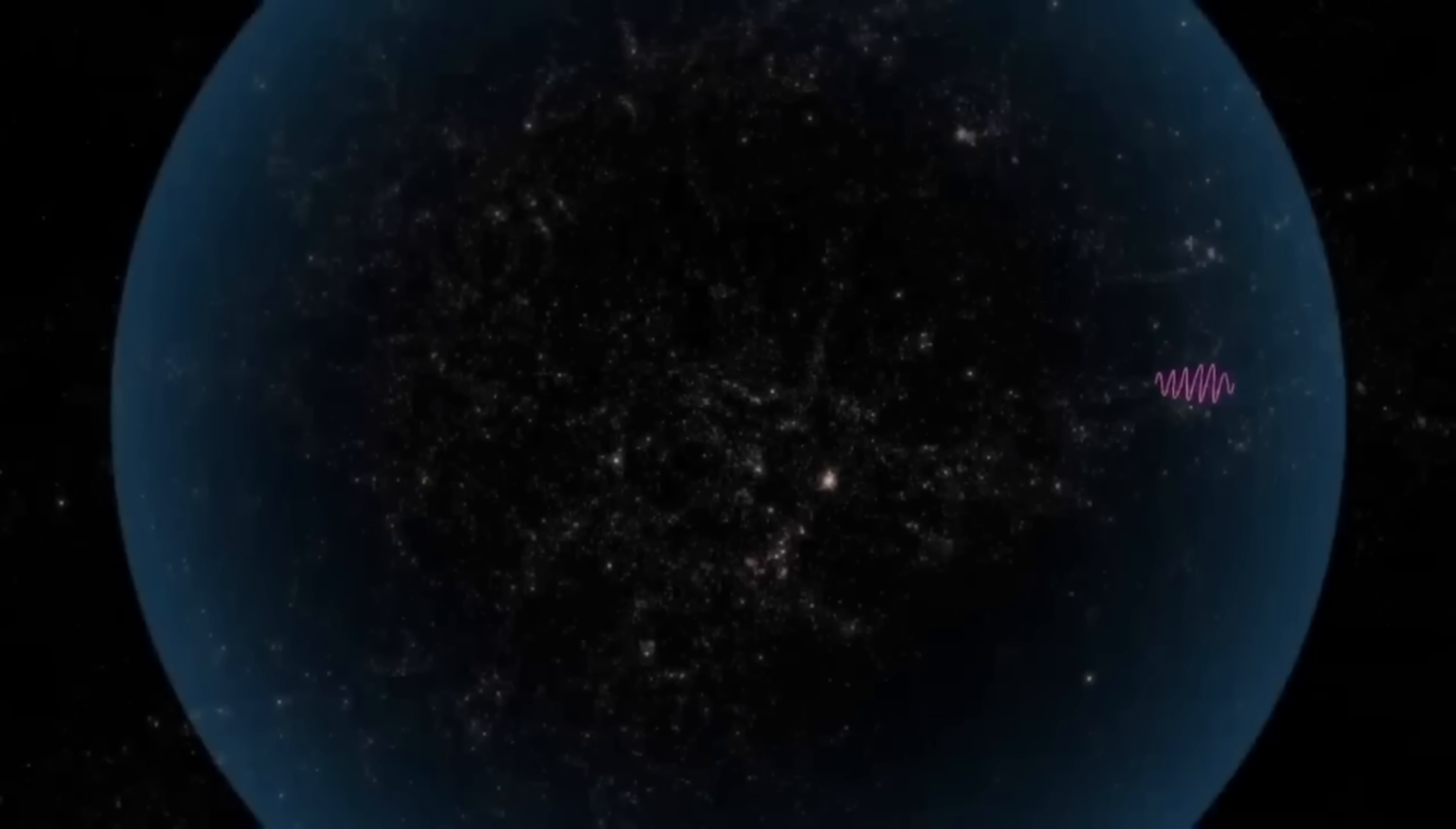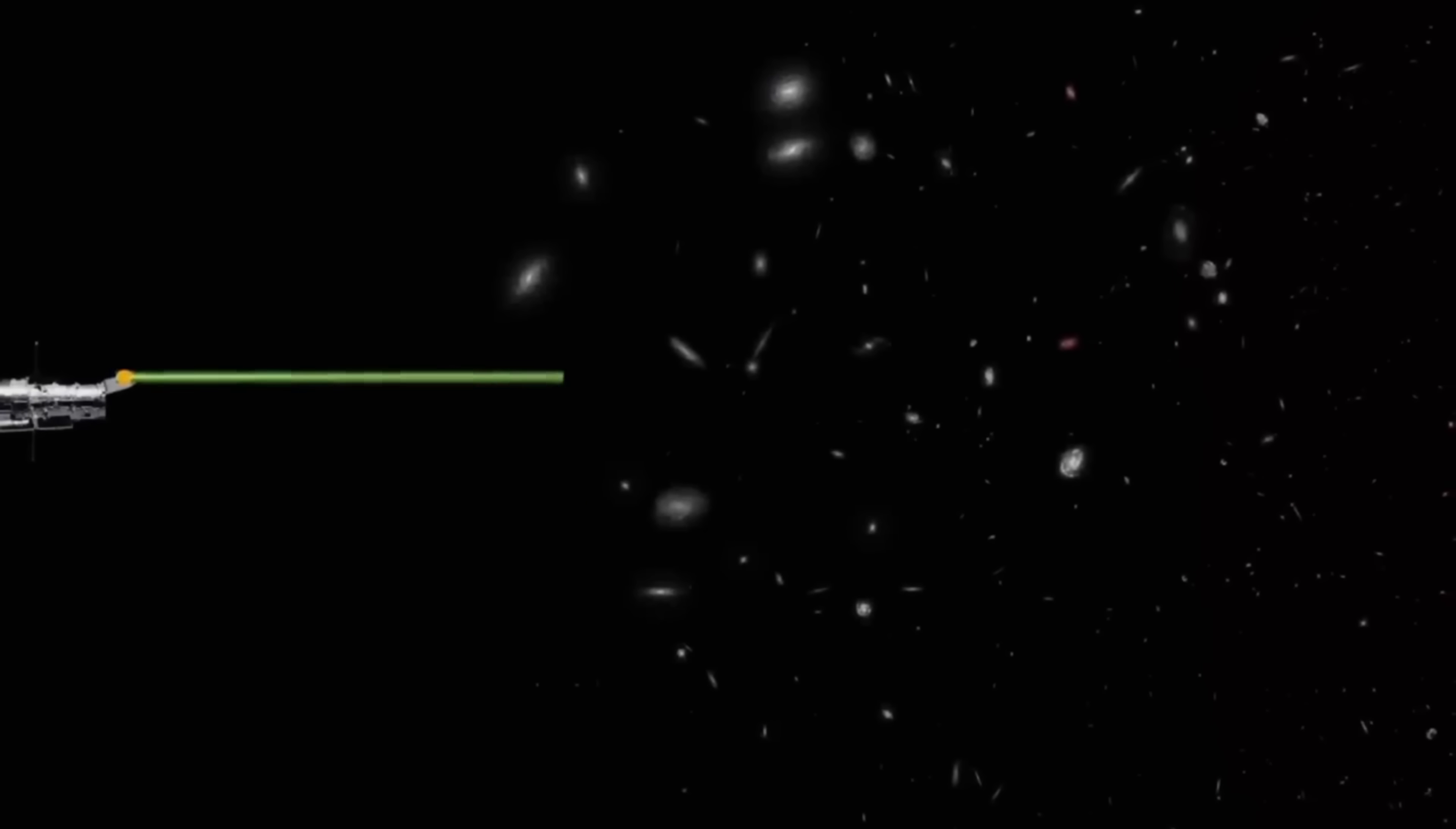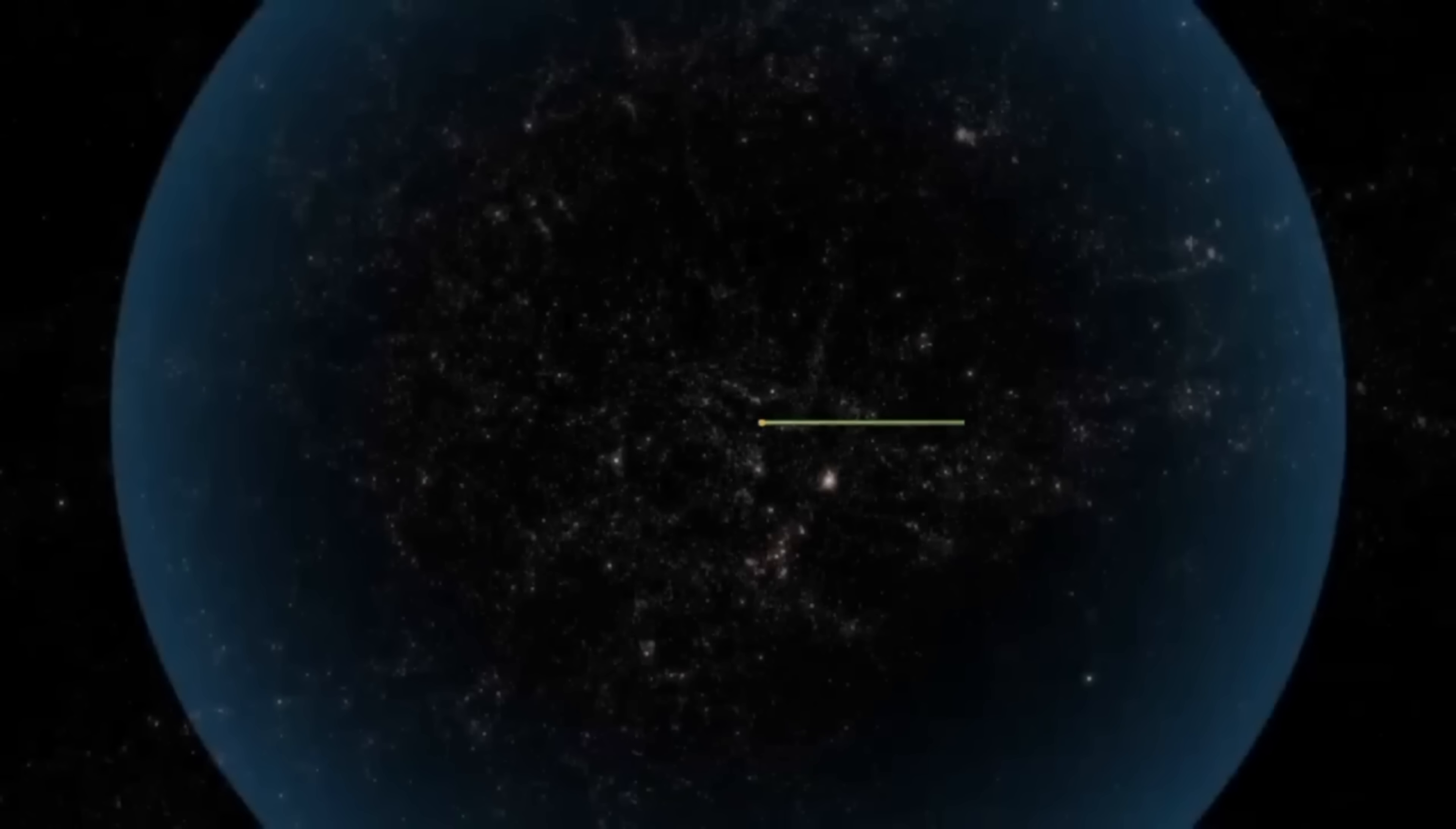When we look at distant parts of the universe, we're actually looking back in time. We don't see those regions of space as they are right now, but rather as they were in the past. This happens because light takes time to travel through space. For example, if we look at something one light year away, we're seeing it as it was one year ago. The farther we look, the further back in time we see.